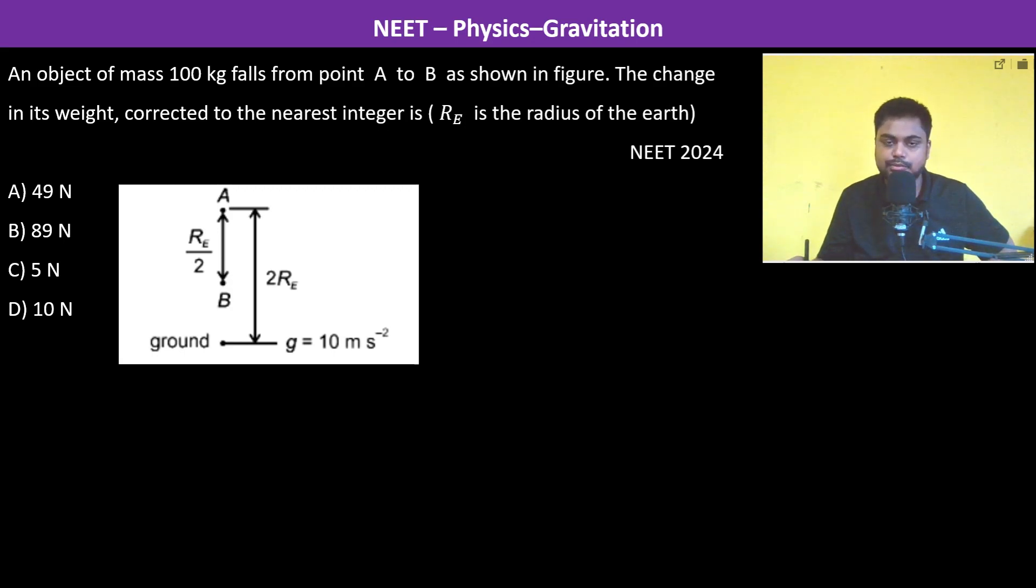An object of mass 100 kg falls from point A to point B as shown in the figure. The change in its weight—weight is basically the gravitational force by which the body is pulled towards the center of the earth. In this case, corrected to its nearest integer where Re is the radius of the earth.